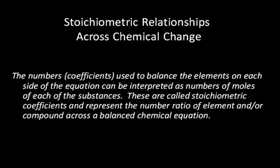Stoichiometric relationships across chemical change. We can use these relationships to help us predict the amount of product produced in a chemical change, or if we know the product that we want, how much reactant to use. The numbers or coefficients used to balance the elements on each side of the equation can be interpreted as the number of moles of each substance. These are called stoichiometric coefficients and represent the number ratio of elements and/or compounds across a balanced chemical equation.